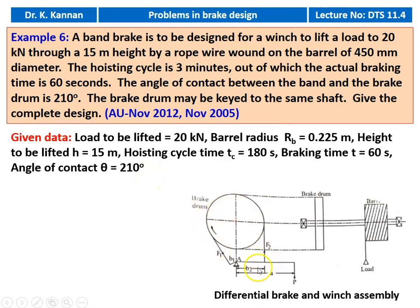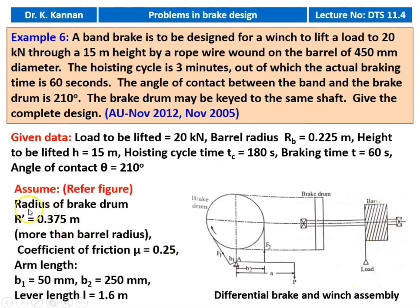It is a differential brake. With all the data given, F1 and F2 are the forces, this is the brake drum with the barrel on which the wire is wound, and this is the load. We have to assume the following data referring to the figure: radius of the brake drum R dash equal to 0.375 meter. The brake drum diameter must be assumed larger than the barrel radius, so we take 0.375 meter. Coefficient of friction we assume mu equal to 0.25. Arm lengths B1 equal to 15 millimeter, B2 equal to 250 millimeter, and lever length A equal to 1.6 meter.